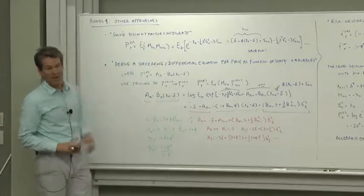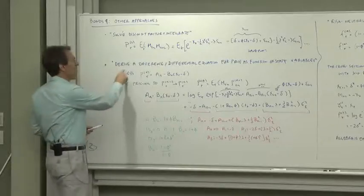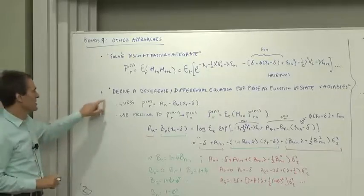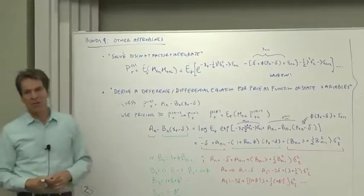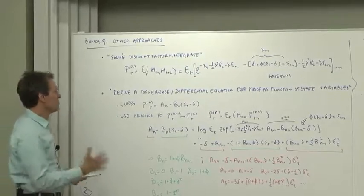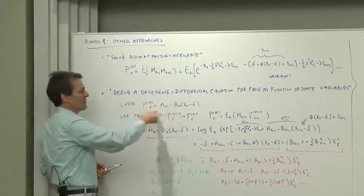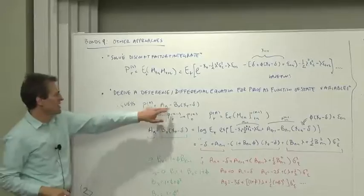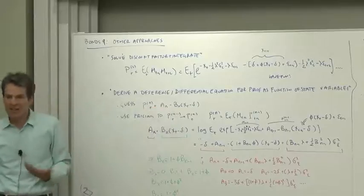A cleverer way to do it is let's derive a difference or differential equation for price as a function of state variables. This is the way that we end up solving more complicated term structure problems. So what we'll do here is we'll guess that the price is a linear function of the state variable, and we'll try to find the an and bn that make that work.